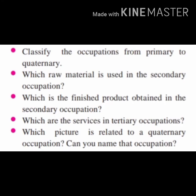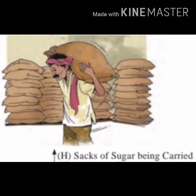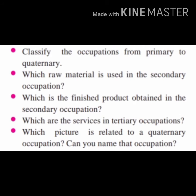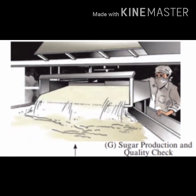Second question: which raw material is used in the secondary occupation? Sugar cane is the raw material used in the secondary occupation. Which is the finished product obtained from the secondary occupation? Sugar is the finished product. What are the services in the tertiary occupations? Transport of sugar cane, sacks of sugar being carried, and sales of goods. Which picture is related to quaternary occupation? Picture G — the occupation is quality testing.